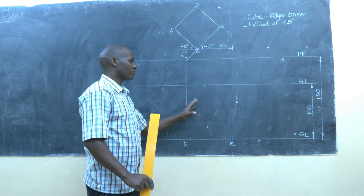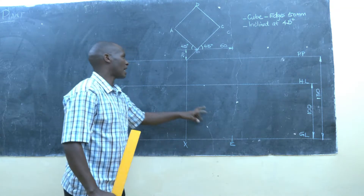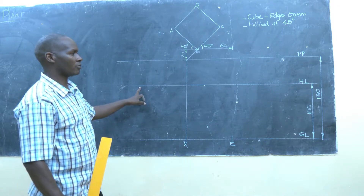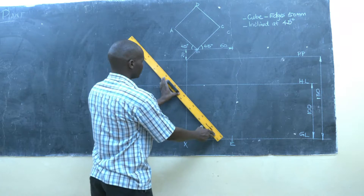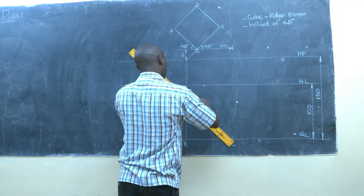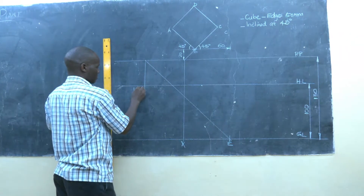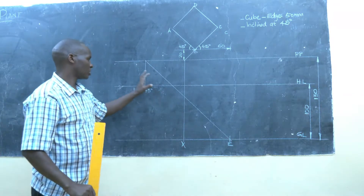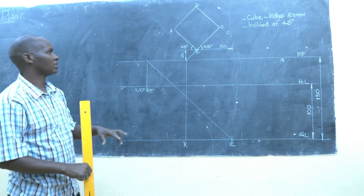To generate the left vanishing point, we will draw a line at an angle of 45 degrees from the spectator until it touches the picture plane. We've already generated the left vanishing point at an angle of 45 degrees, and we do the same to generate the right vanishing point at an angle of 45 degrees.